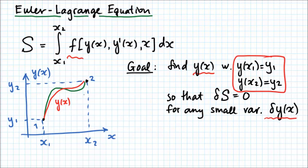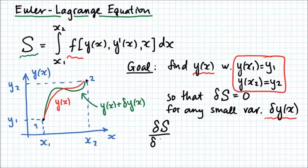In other words, if we find the true y of x and then add a small arbitrary delta y of x to it, we don't expect this integral to change. We can write this in a nice notation using calculus of variations: delta S over delta y equals 0. This is very much like the equation we use to find the maximum or minimum of a function, and we solve it for y of x.